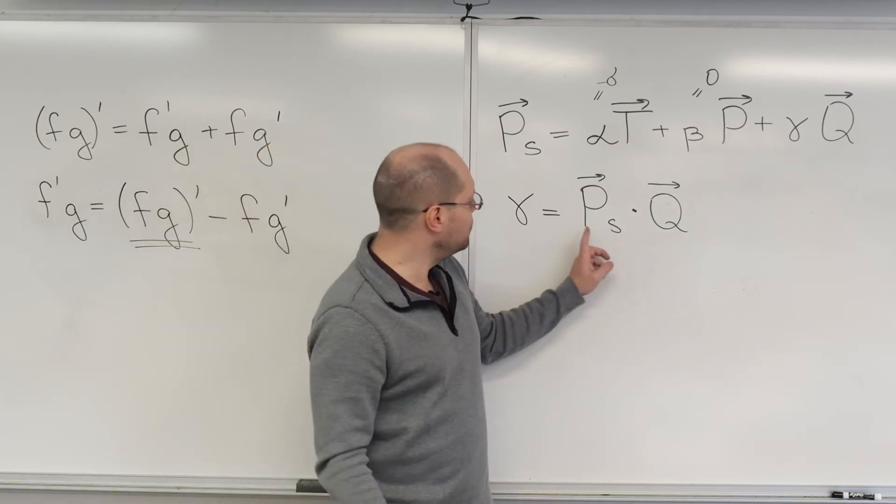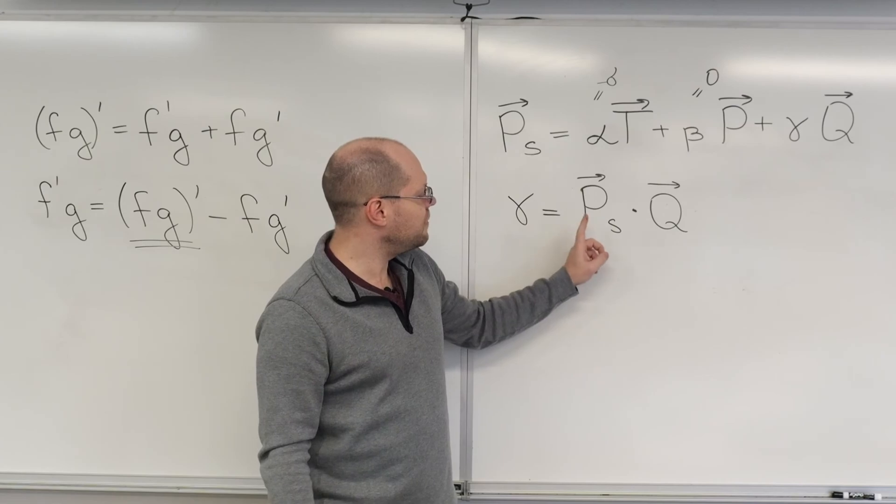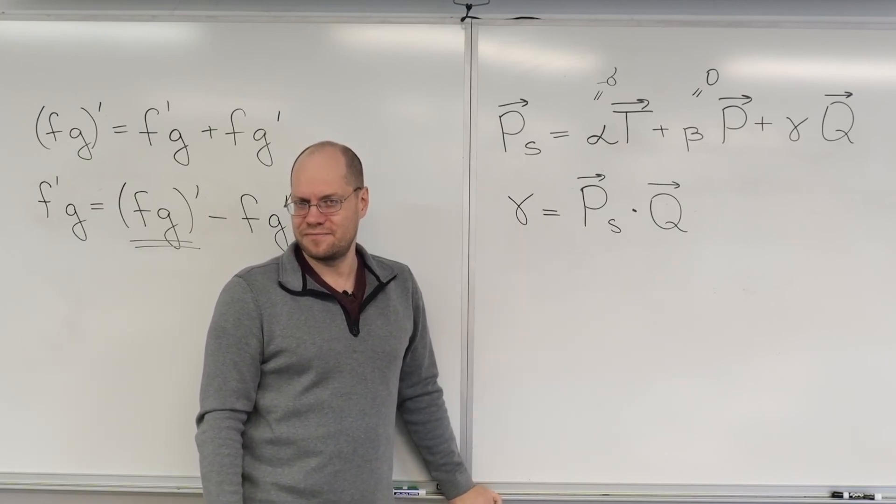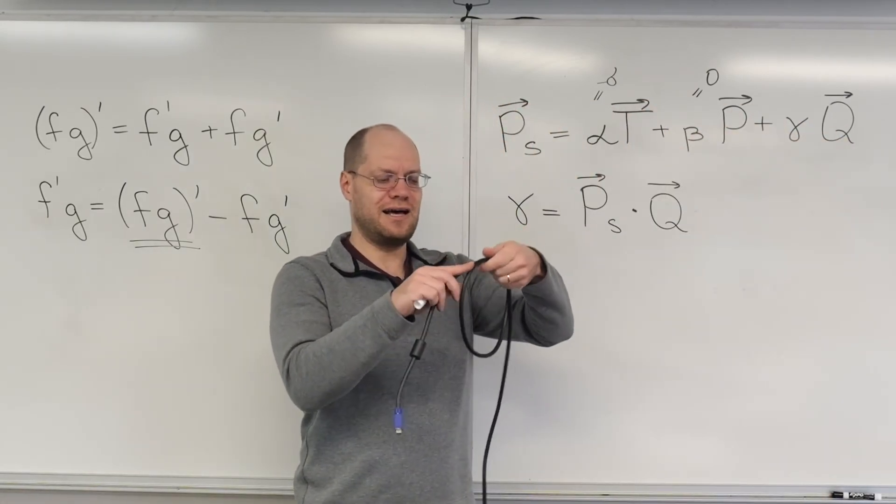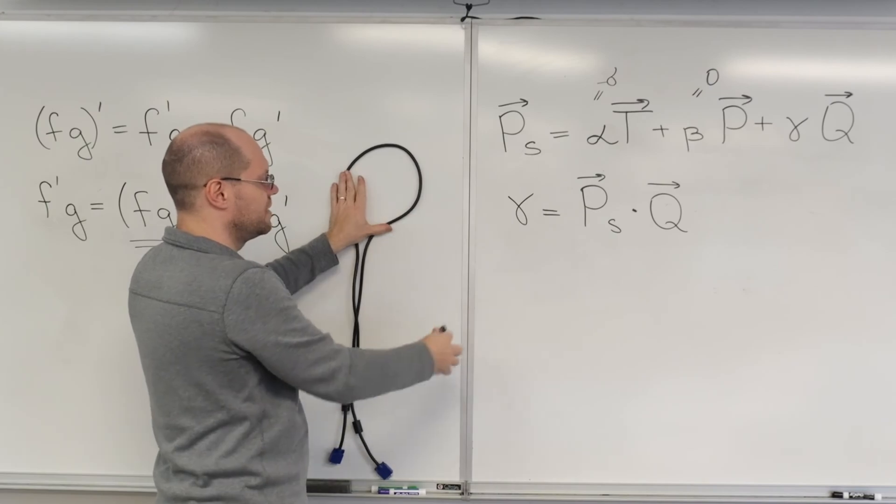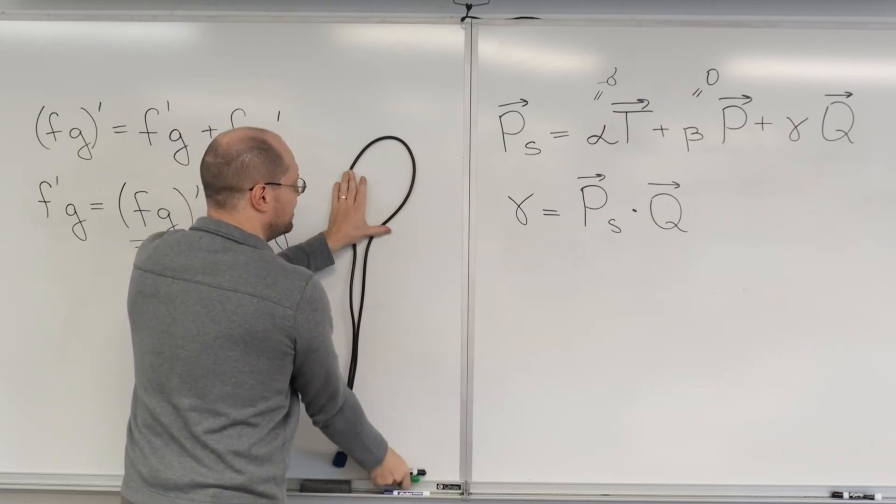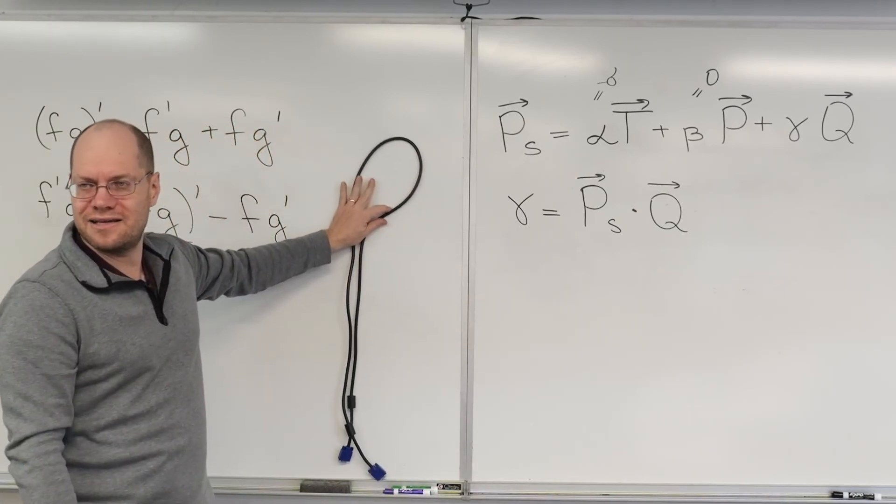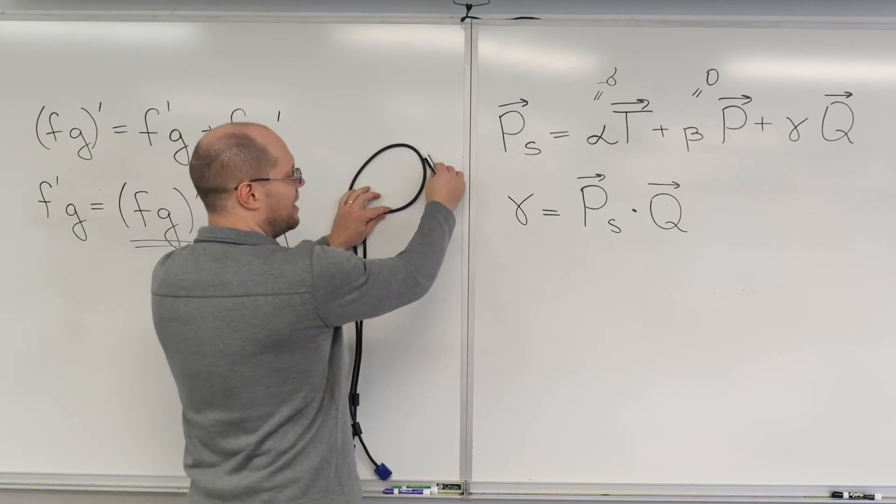Why would this not be zero? Why would the derivative of the principle normal not just lie in the plane, in the osculating plane? Well, let's think about that. So if the curve was lying direct, was lying in the plane, let me put it this way. So if the curve was a planar curve, then the tangent lies in this plane. And then the principle normal will lie entirely in this plane, like this, okay?